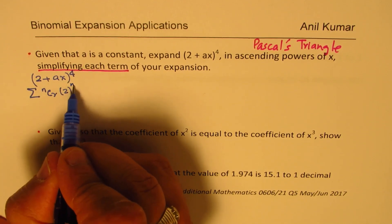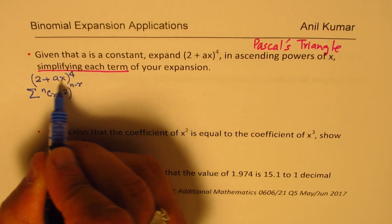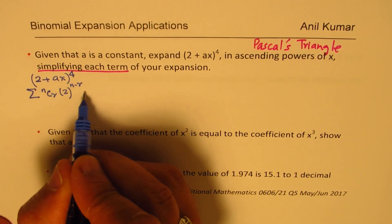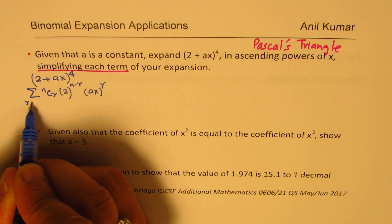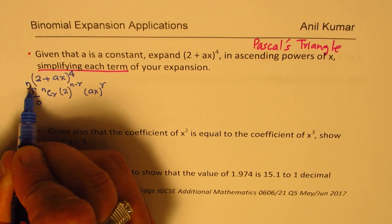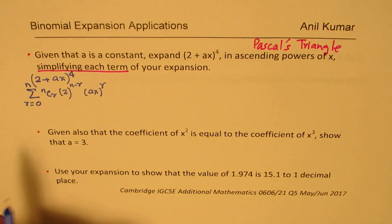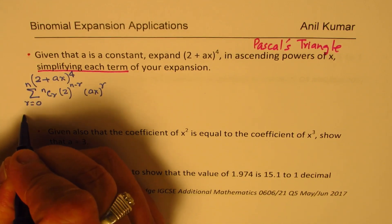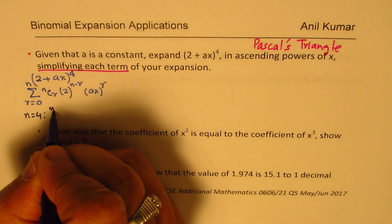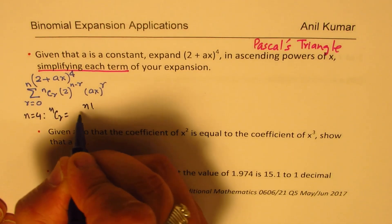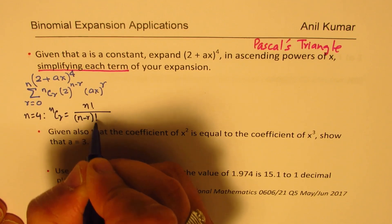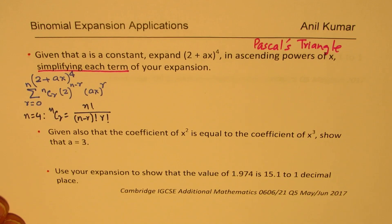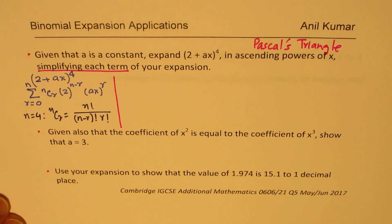The combination formula is: the powers of the two terms always sum to 4 (our n), and the other term is (ax)^r, where r varies from 0 to n, giving n+1 terms. In our case, n = 4. The meaning of nCr is n! divided by (n−r)! times r!. However, we are going to use Pascal's triangle since it is much simpler.